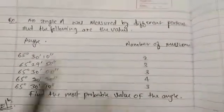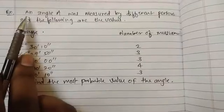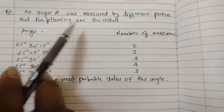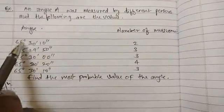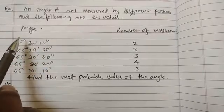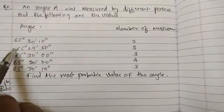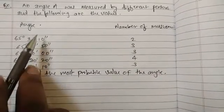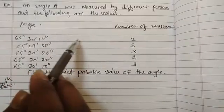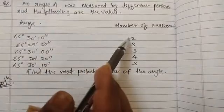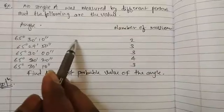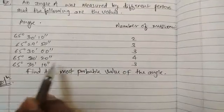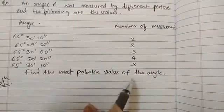Now we will start with this numerical. The statement is: an angle A was measured by different persons and the following values are given. These values are based on measurements by different persons. The number of observations made by each person for that angle measurement are given in front of the measurement value. This angle is measured twice, and it is measured thrice. They have asked to find the most probable value of the angle.